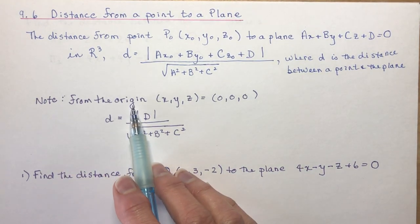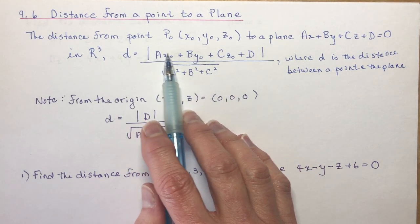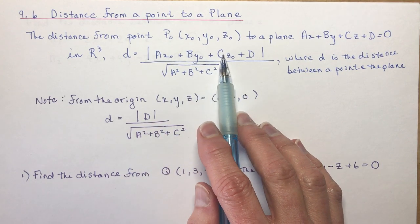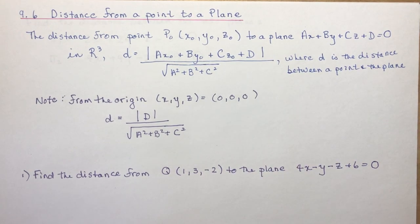So note, if we're at the origin when x, y, and z are zero, you can see that as soon as I get rid of all these things, I would have D over the magnitude of the direction vector.